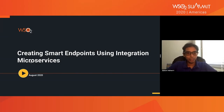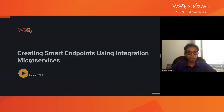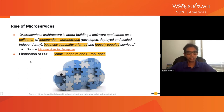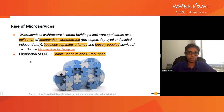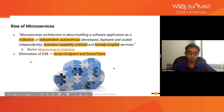Welcome everybody. Today's session is about creating smart endpoints using integration microservices. I'm going to primarily touch on some key challenges you would face when building microservices architecture when it comes to integrating services and building inter-service communications. Let's look at what microservices really are. Microservices can be defined as a way of building software applications as a collection of independent and autonomous services. These services are business capability oriented and loosely coupled from each other.